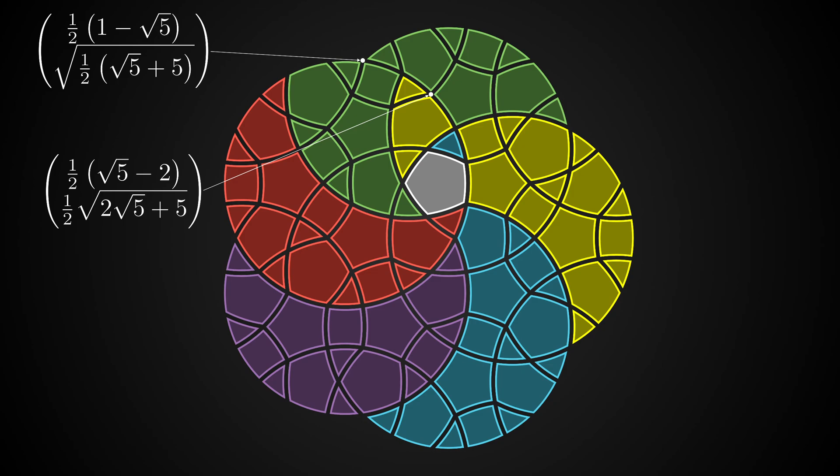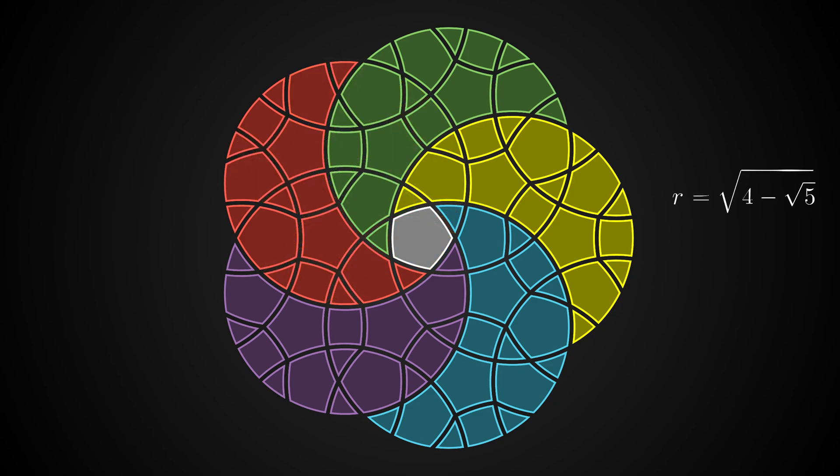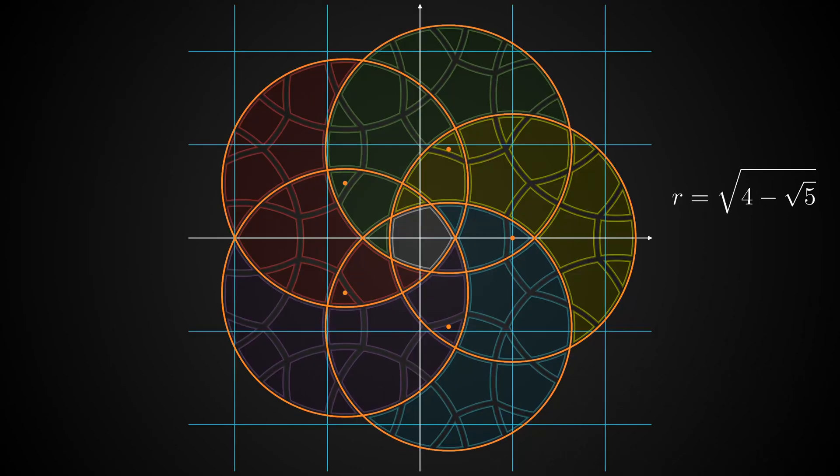I chose the radius square root of (4 minus square root of 5) not only because it is the most aesthetically pleasing. It also gives rise to some nice mathematics. For instance, think about how you would calculate the coordinates of this intersection. Maybe you would do it by calculating the intersections of these two circles. This would work, but here's a simpler way.